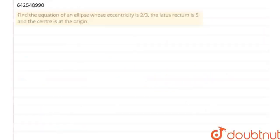So the question says find the equation of the ellipse whose eccentricity is 2 by 3 and the length of latus rectum is 5 and center is at origin.